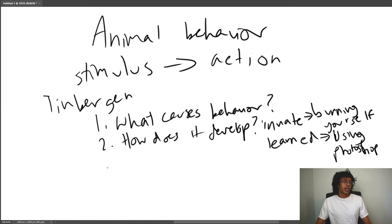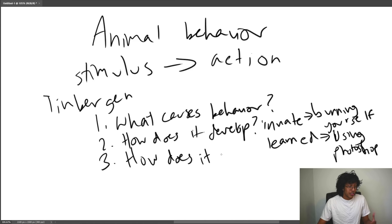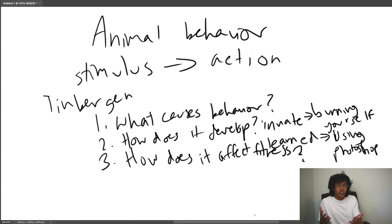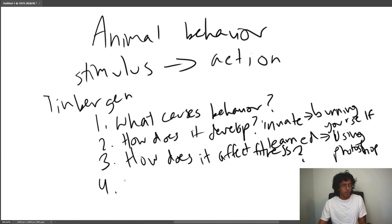Third: how does it affect fitness? There's no reason why an organism would evolve a behavior if it doesn't make them more likely to survive. For example, a chimp teaching her kids not to eat poisonous fruit clearly increases fitness. Fourth: how does the behavior evolve? Chimps that teach their kids not to eat poisonous fruits will have more surviving kids, who will probably teach their own kids — that's likely how that behavior evolved.